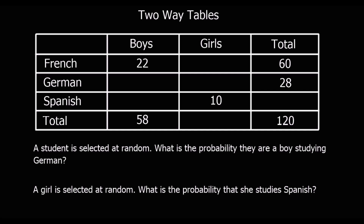Here we've got a two-way table. When we've got a two-way table, they often give us missing values — missing numbers that we've got to find. If we look at this French column, there are 22 boys and a total of 60 people, so from that we can work out how many girls there are. What do we have to add to 22 to get 60? That's 38, so the missing number is 38.